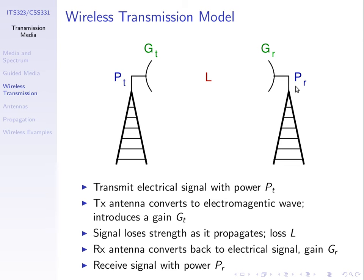In the same way as an audio system, we start with transmit power. For components that introduce a loss, we divide; for components that introduce a gain, we multiply — and we end up with the receive power. We start with the transmit power, the transmit antenna introduces gain GT, the signal loses strength across distance giving us loss L, then the receive antenna has gain GR, and we get the receive power PR. We will do calculations to see under what conditions we can successfully receive.